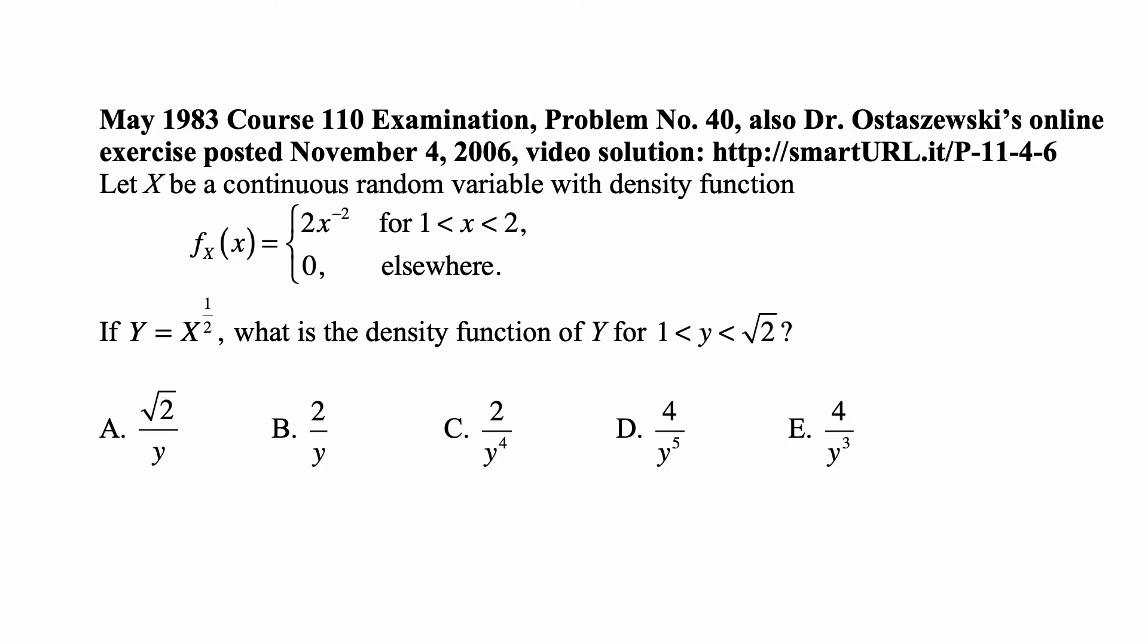Here's a problem for today for exam P on probability. Let X be a continuous random variable with density function f_X(x) = 2x^(-2) for 1 < x < 2, and 0 elsewhere.